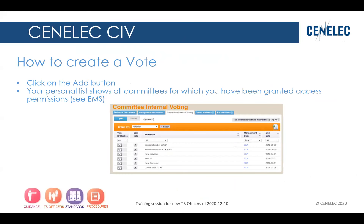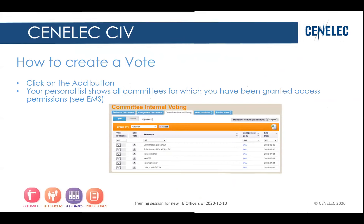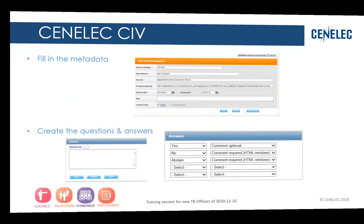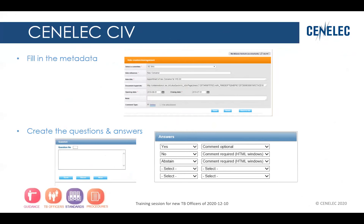For a quick summary: it's really easy. You've got an add button with your personal list of committees. You need to fill in some metadata — some are mandatory, some are not. Be careful about when you start your vote and the length of your vote if you want to enjoy the reminder system. You have to create a question — it is a questionnaire. The tool is a bit puzzled if you don't have a question; it's not working properly and users do not have access.